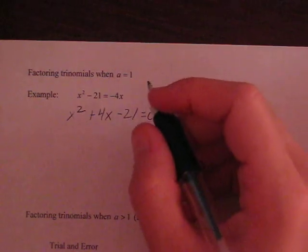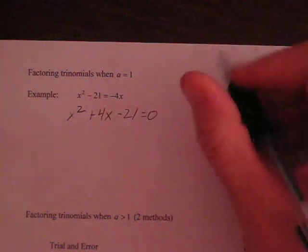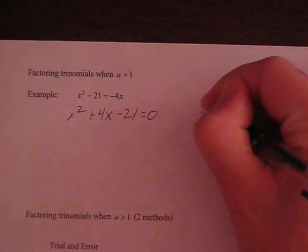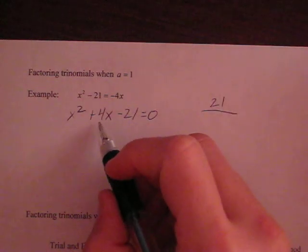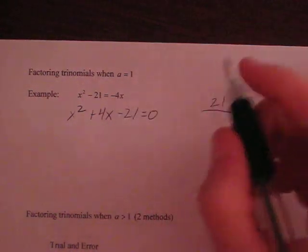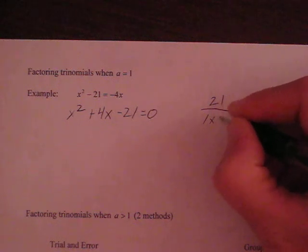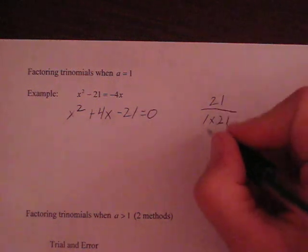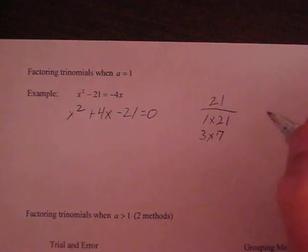Once we get here, we're going to have to find the factors of 21 that combine or add or subtract to give me 4. So my factors of 21, I'm going to list them out, are 1 times 21, or 3 times 7.